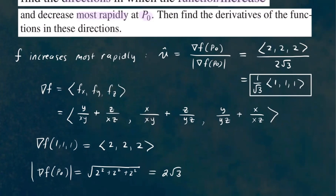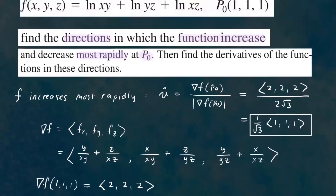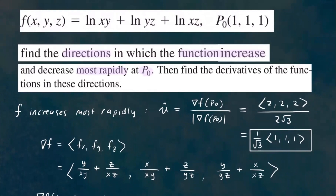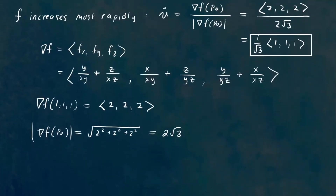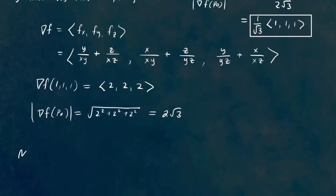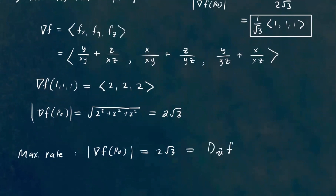We also want to find the derivative in that particular direction — that would be the maximum rate. The maximum rate in this direction is simply the magnitude of the gradient of f at that point, which is 2√3. So 2√3 is our directional derivative in the direction of greatest increase at P0, representing the maximum rate.